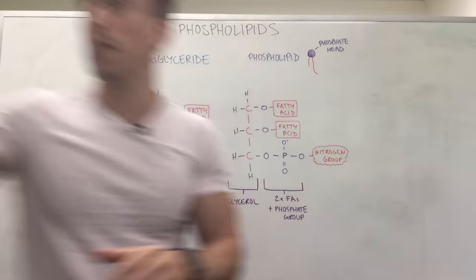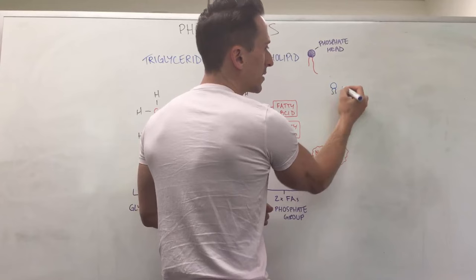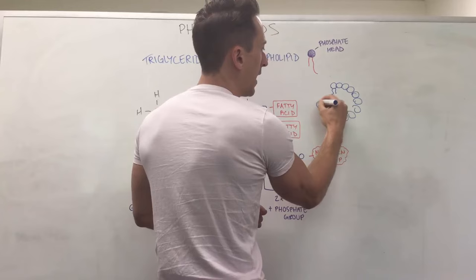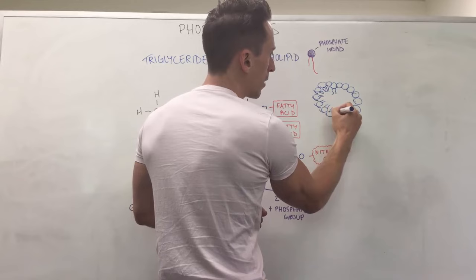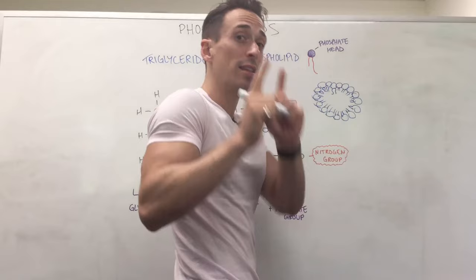And what that means is, ultimately, I'll quickly grab a pen, is that if I were to draw this up with a phosphate head, fatty acid tail, they'll arrange themselves in a way. These are all the phosphate heads and then the fatty acid tails coming in like this and it creates a bilayer in which you get two layers.